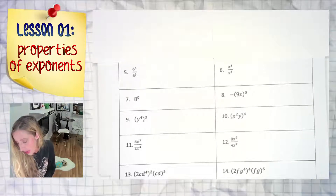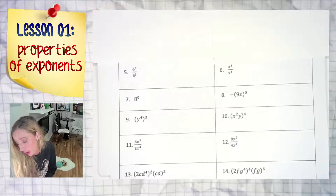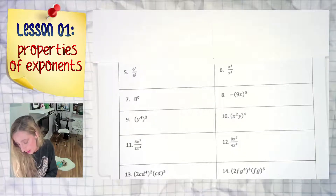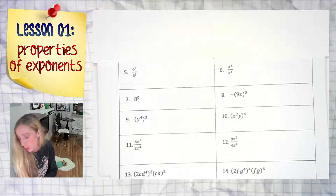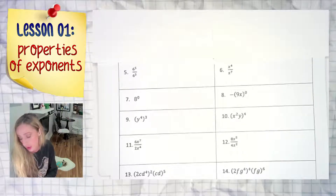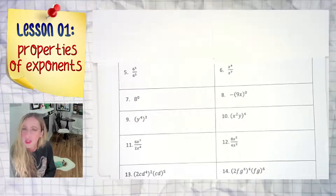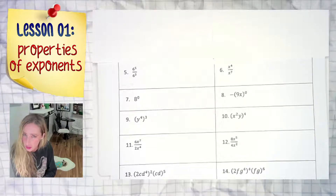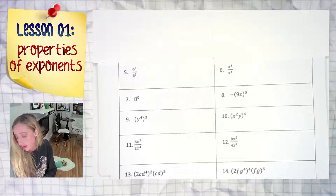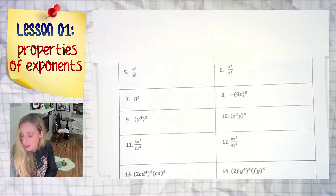In number five, we have six to the fifth power over six to the third power, in a fraction. Contrary to what some of you may be thinking, you do not need to actually evaluate six to the fifth and six to the third. Please think smarter and don't think harder. Six to the fifth over six to the third — use your properties of exponents.